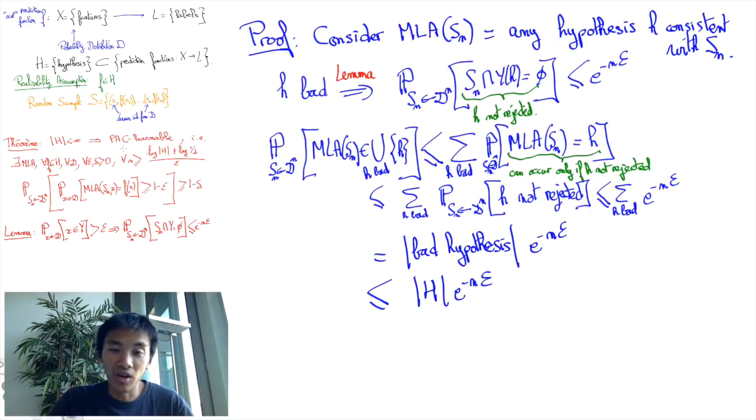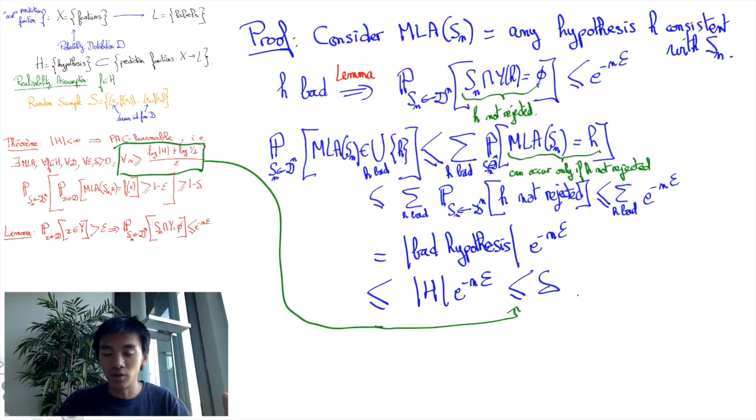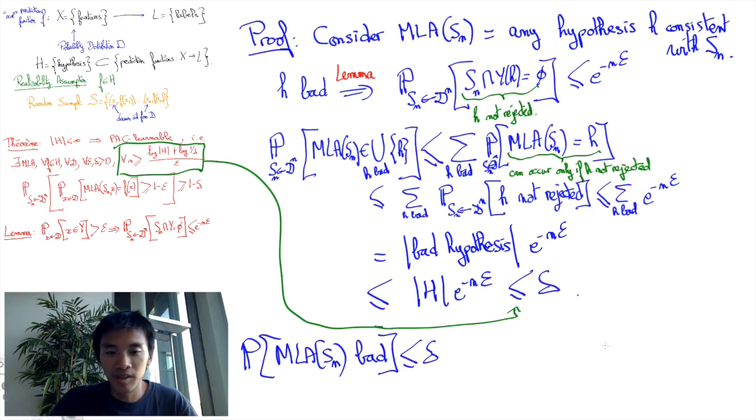And now we're going to use our assumption on n, the fact that it is larger than the logarithm of the cardinal of H divided by delta, all of it divided by epsilon. And we obtain exactly a right-hand side that is delta. And now to conclude, we just need to negate it all. We obtain that the probability that all bad hypotheses are rejected is at least 1 minus delta.